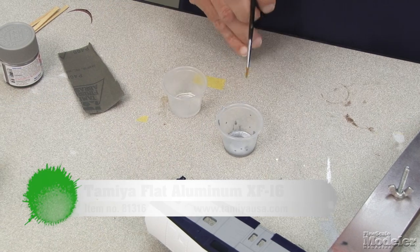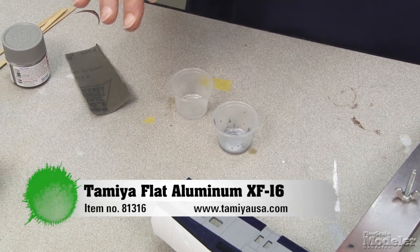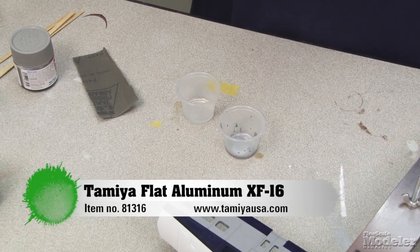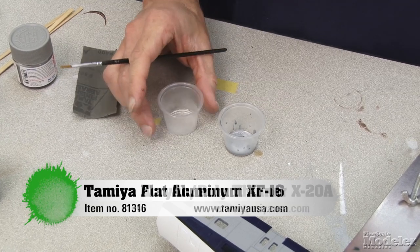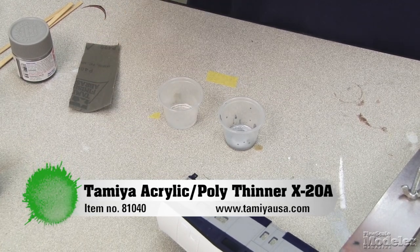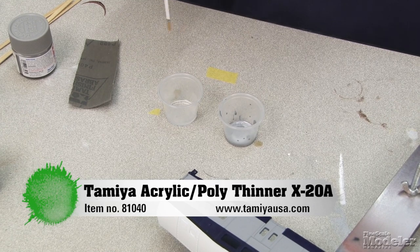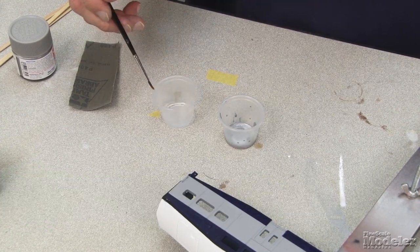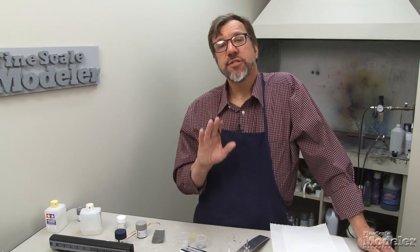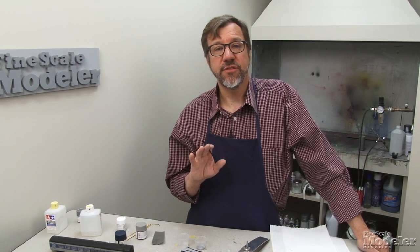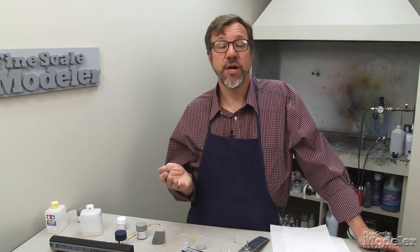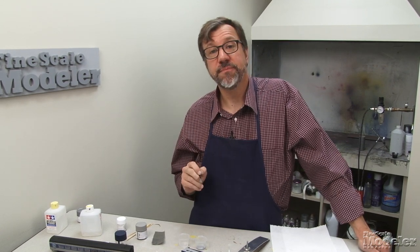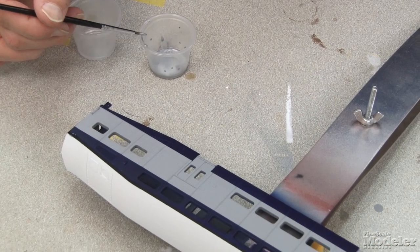So we got a little Tamiya flat aluminum that I've put into a cup. It's best to paint out of a cup rather than from the bottle itself. And in another cup, I have some Tamiya acrylic thinner. The reason for the thinner is before I start painting, I'm going to dip the brush into the thinner and blot out most of the excess so that paint doesn't dry in the bristles of the brush, which can ruin your brush and destroy your paint job.